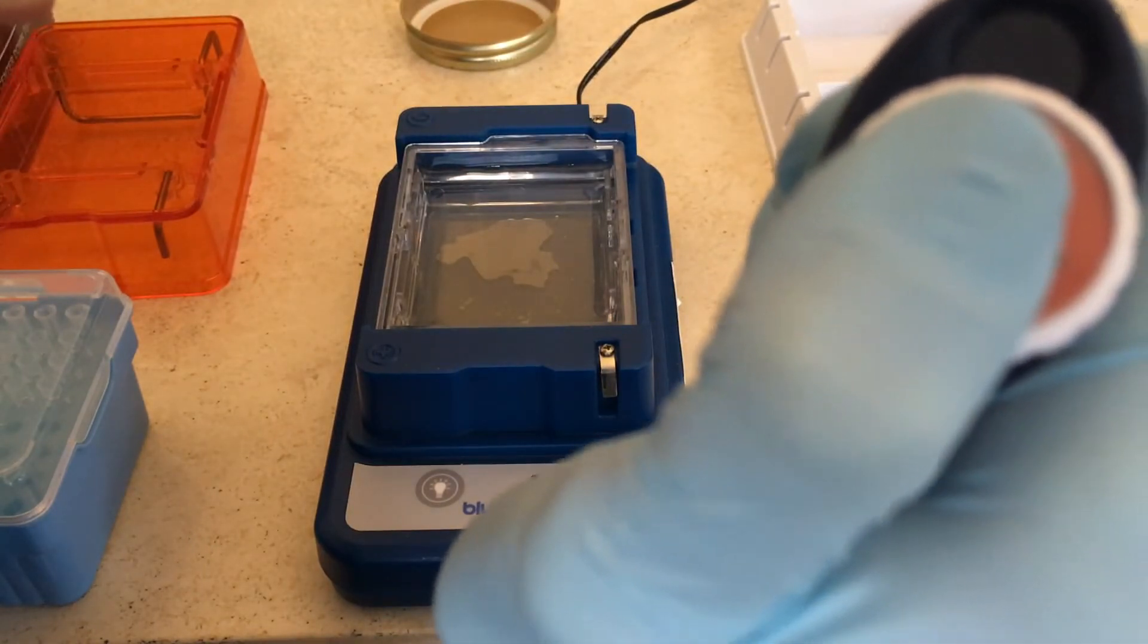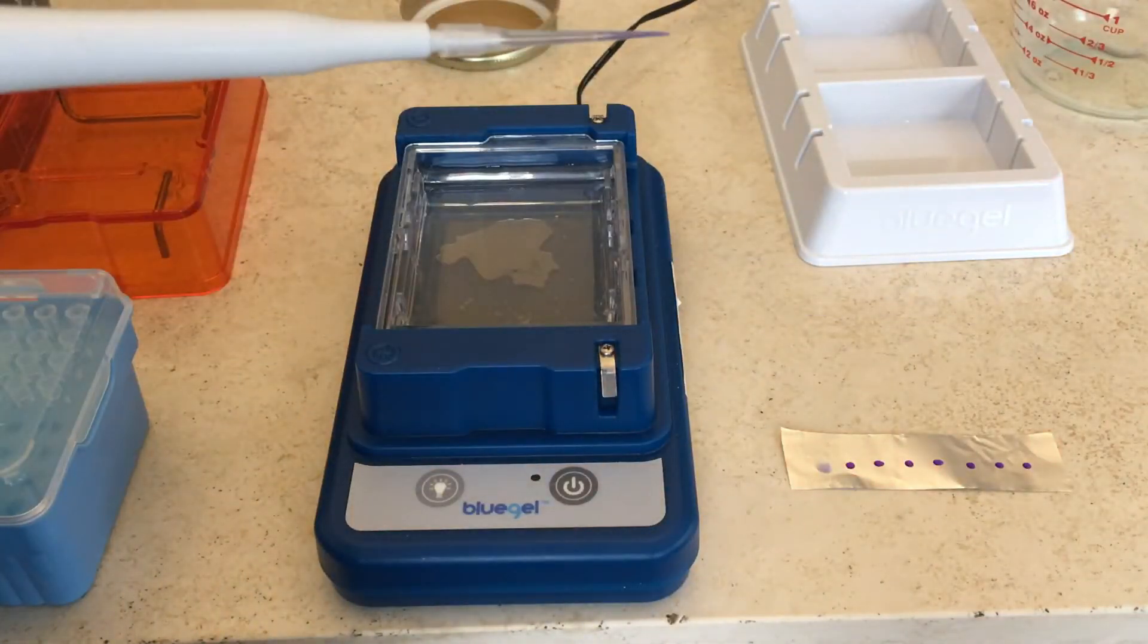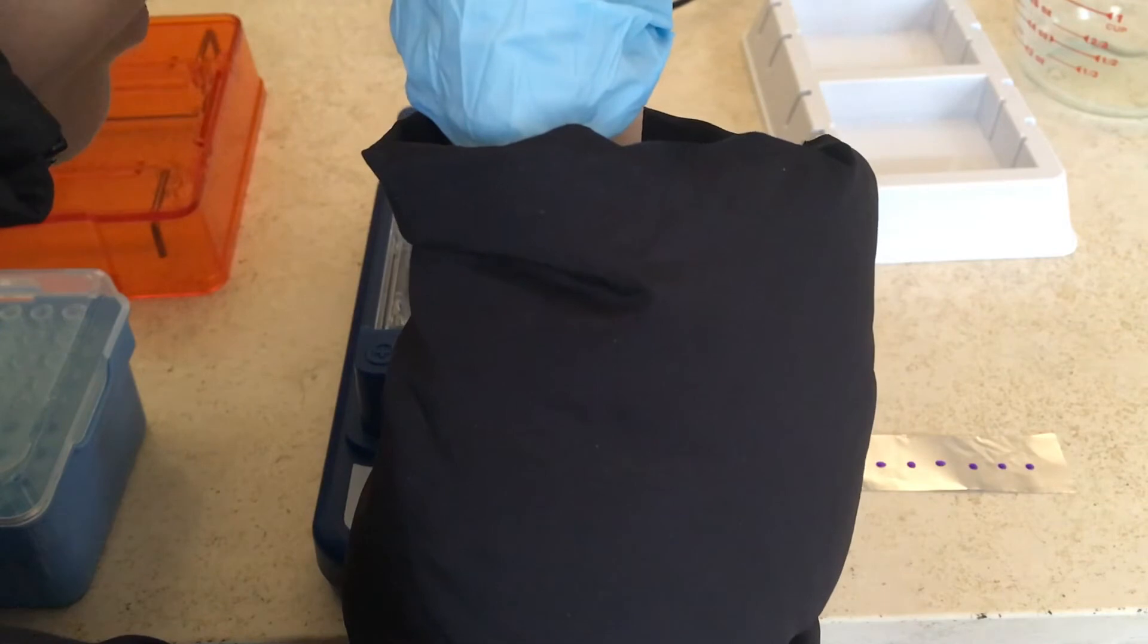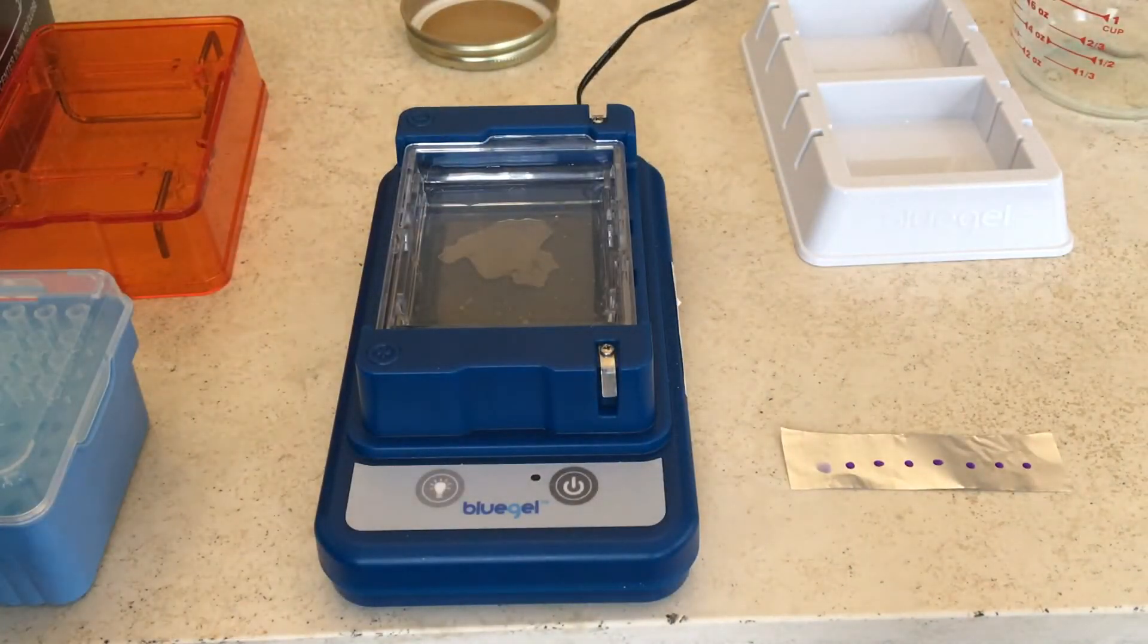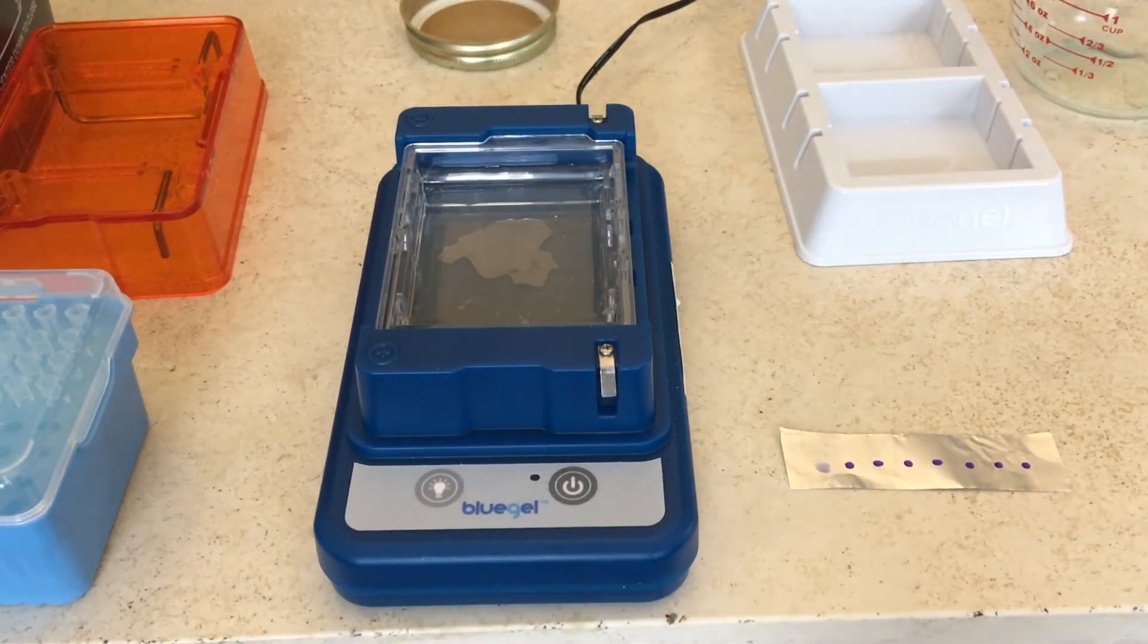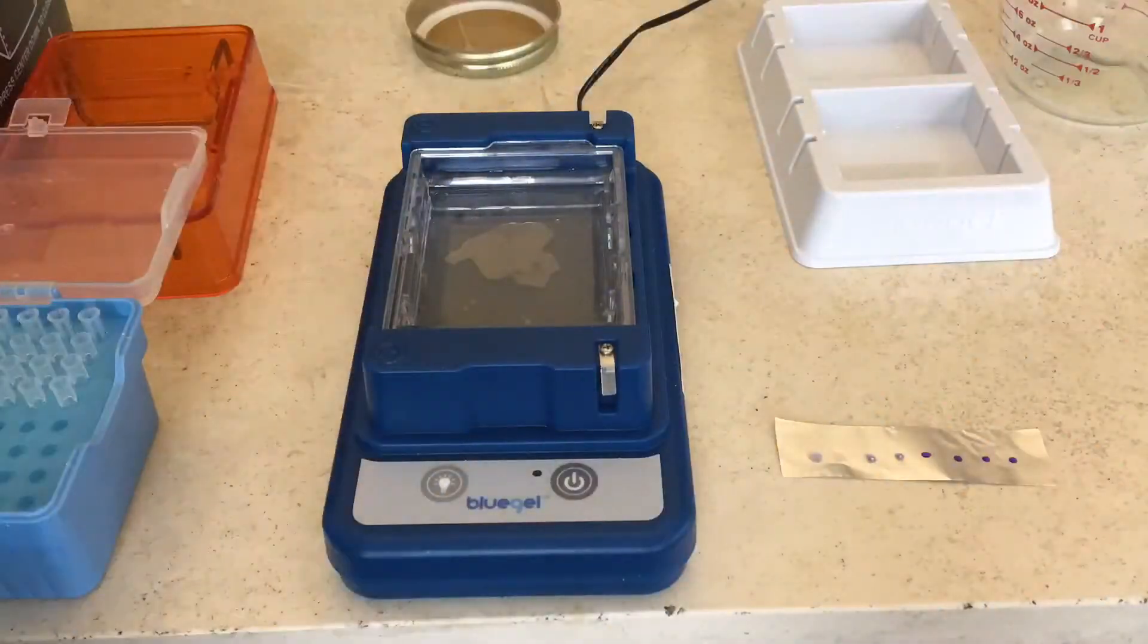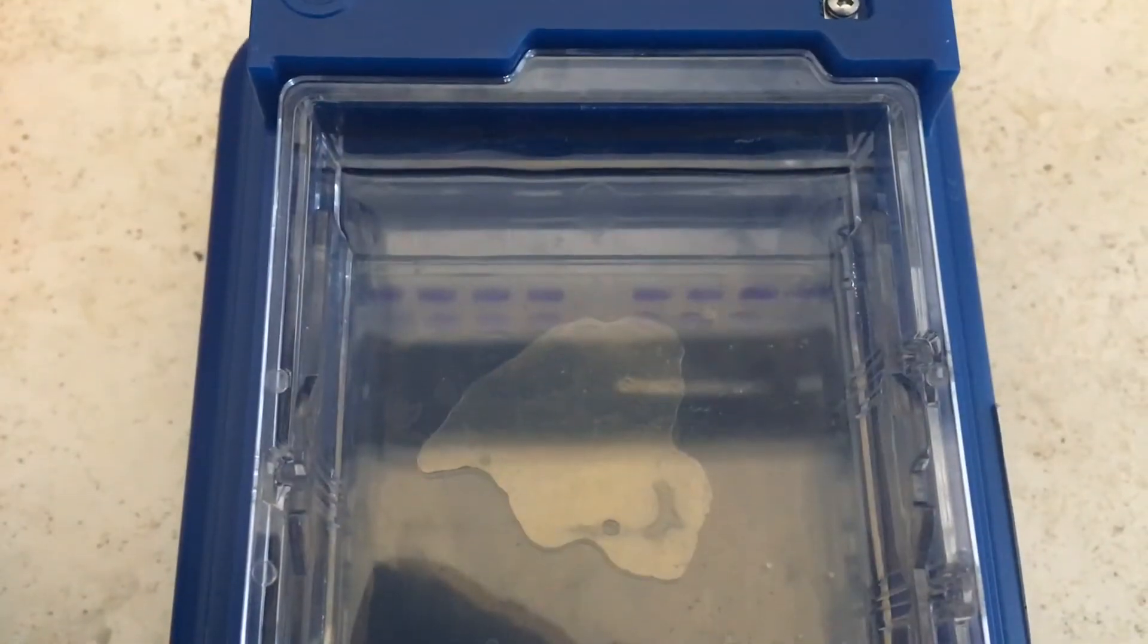Then we're going to aspirate it all back in so it's in the pipette, the mix of the loading dye and the actual DNA template, and then we're going to inject it into one of the wells that's been created by the comb. And you're going to have to use a different pipette tip obviously for each of the samples.